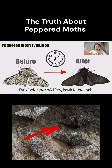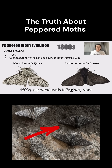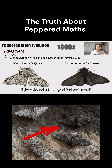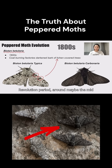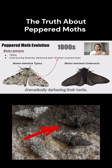Now back in the early 1800s, peppered moths in England — more professionally known as Biston betularia — mainly displayed light-colored wings speckled with small dark spots, perfect for blending in with lichen-covered trees where they mostly inhabited. But during the Industrial Revolution period, around the mid-19th century, soot from coal-burning factories began to coat these trees, dramatically darkening their bark.